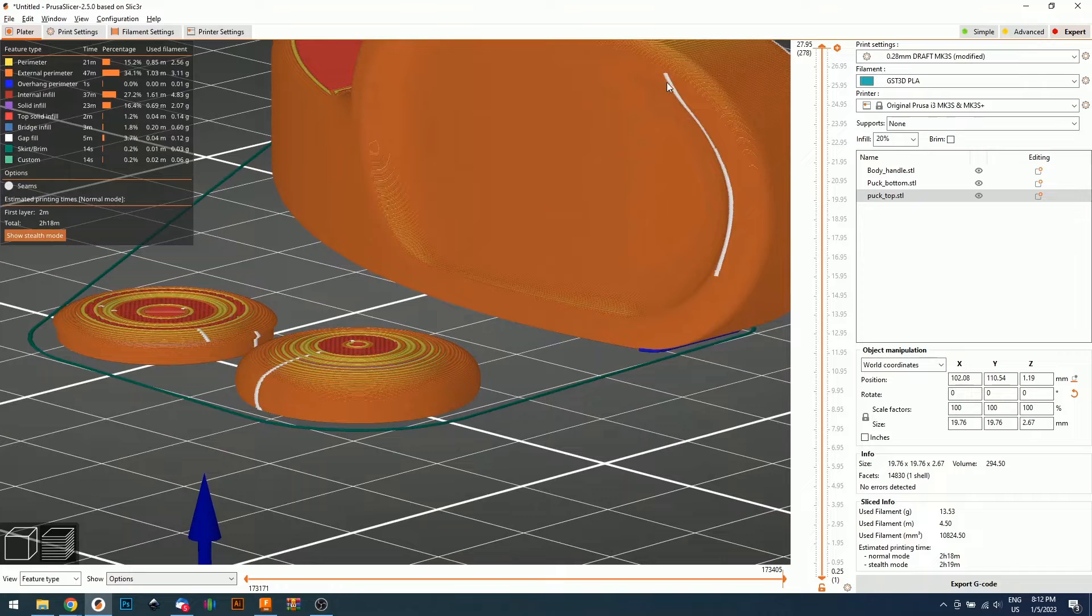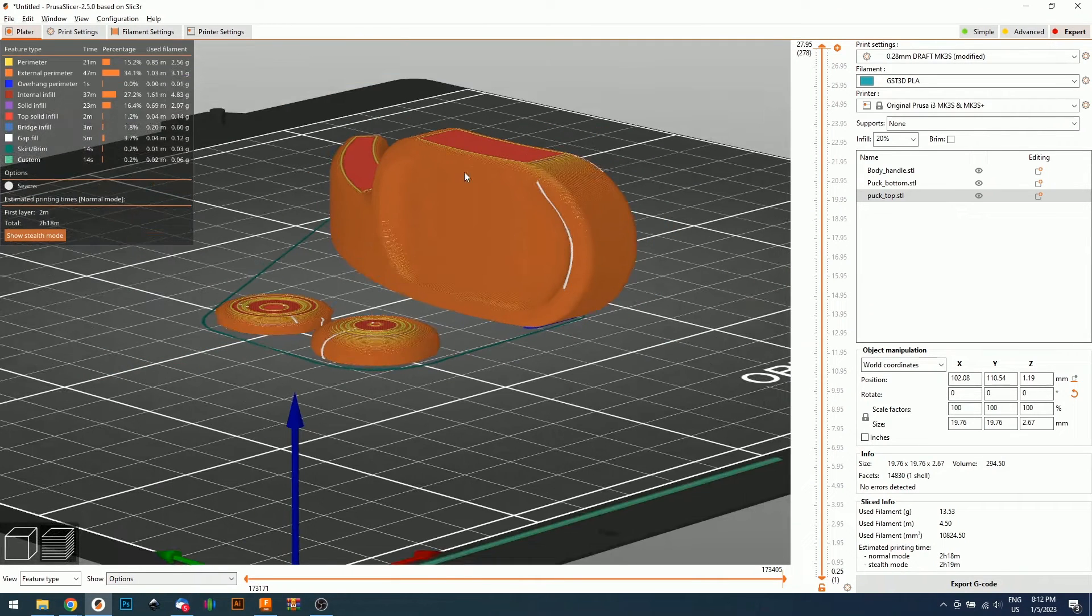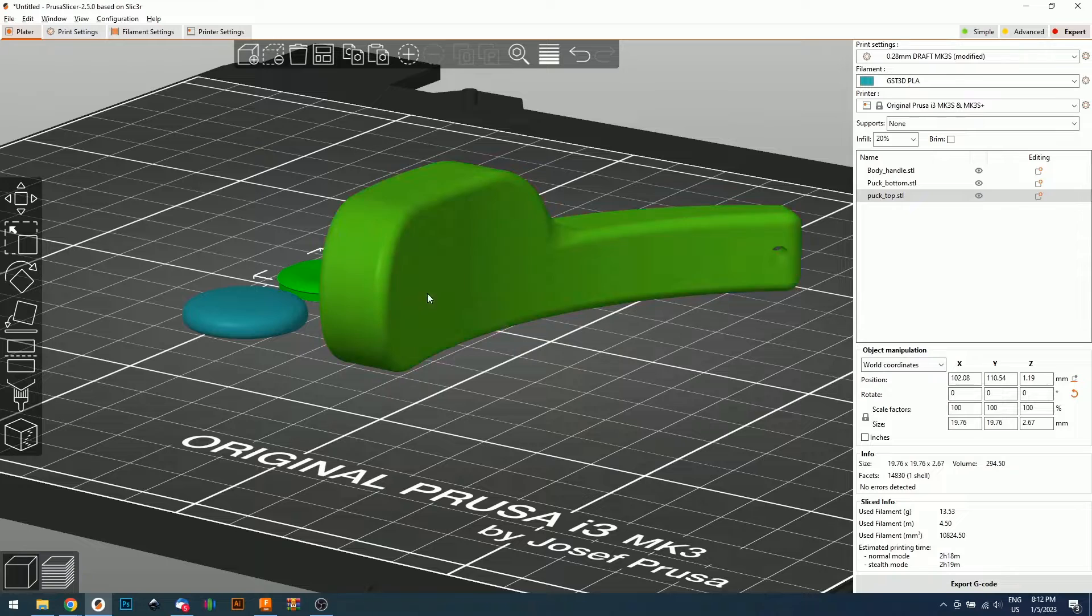One of the things we need to consider as well is where is our seam placement. For example, here you can see that the seam is in the area where we will be sliding the packs around. So we don't want our seam here.